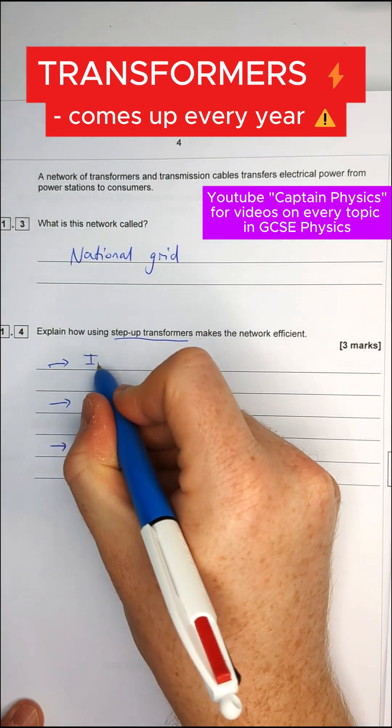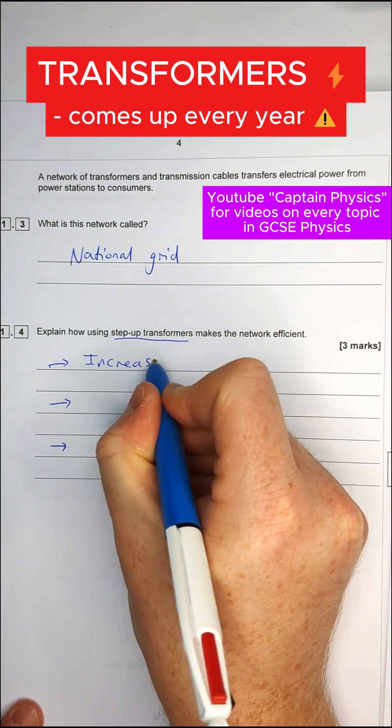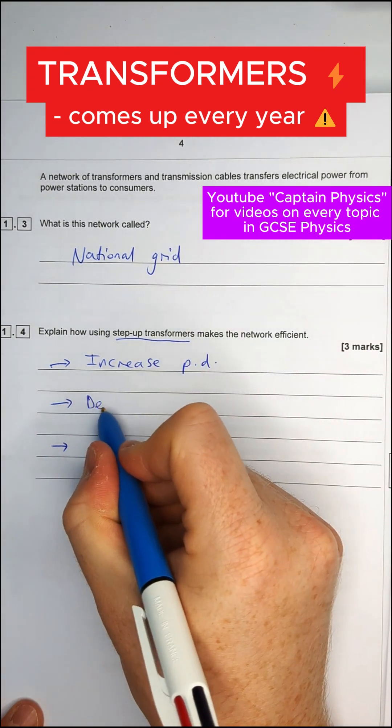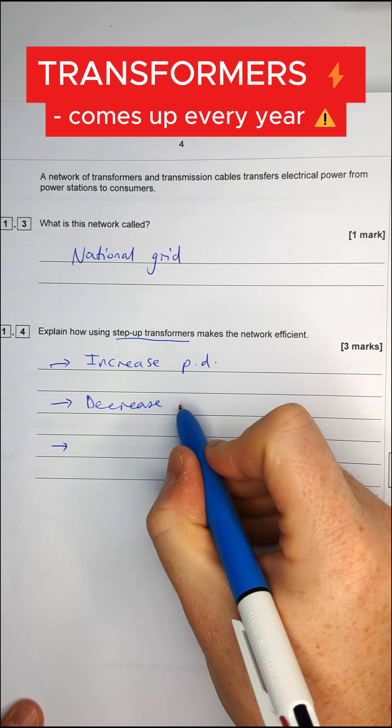Step-up transformers, we should know the easiest mark here, step up, they increase the potential difference. When they do that, they actually decrease the current in the circuit or current in the wire.